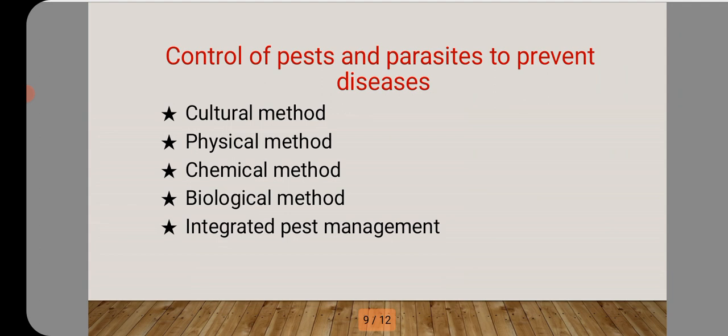Let's look at how we can control pests and parasites to prevent diseases. Since all these organisms are harmful to us, we have the cultural method, the physical method, the chemical method, the biological method, and the fifth one is integrated pest management.